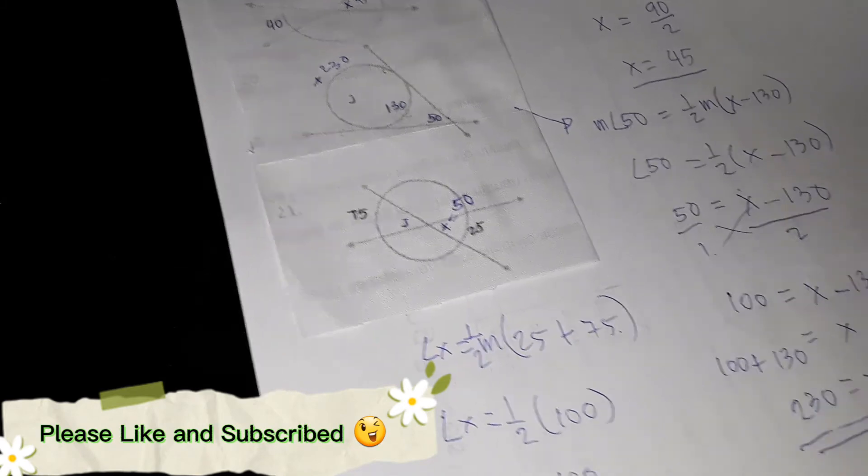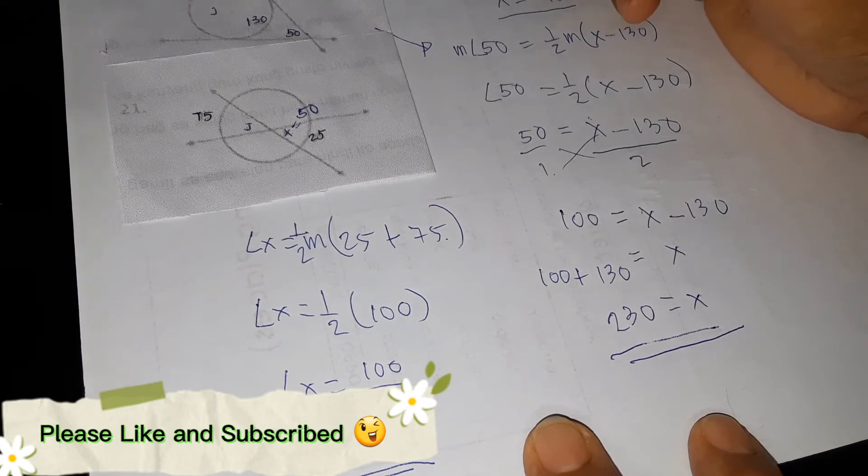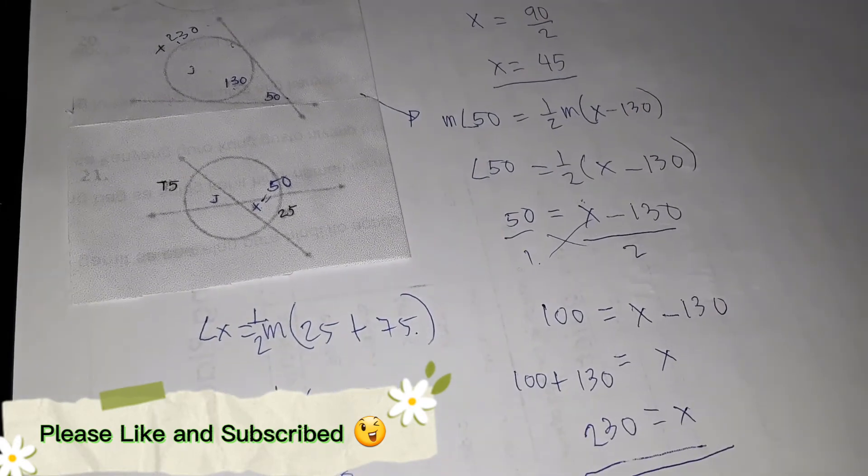So how do we check if our answer is correct? Remember, the whole circle is 360. So 230 plus 130 is equal to 360. So therefore, our answer is correct.